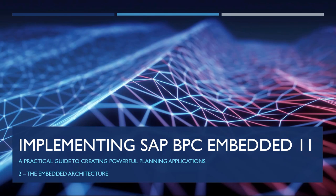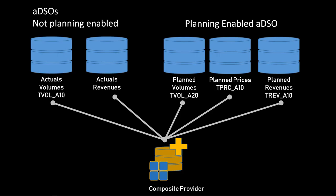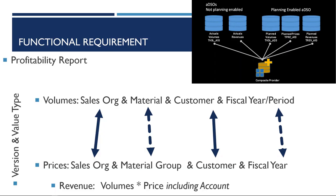In this chapter we will start with the planning application. As with any project, it is important to know where we are headed, and we will start off with the functional requirements of our application. The objective of our planning application is to produce a profitability report. The profitability report must be produced using all the characteristics available for actual volumes.